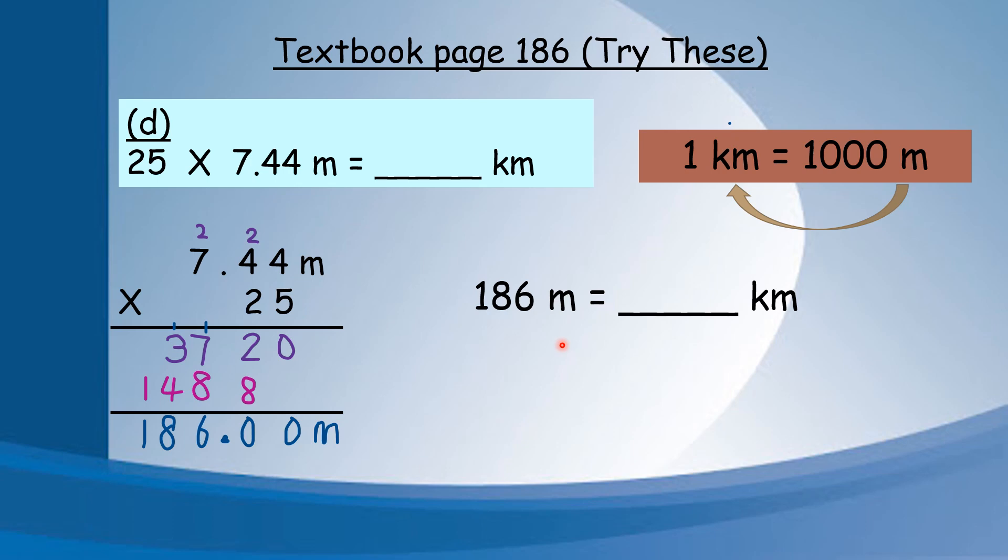Not necessarily we convert first then multiply. You can multiply first then convert the unit, depending on the question - whichever is easier. 186 m convert to km. M to km divide by 1000. I put the point at the back and move 3 steps to the left. 1000 has 3 zeros, so I move 3 steps. I will get 0.186 km.